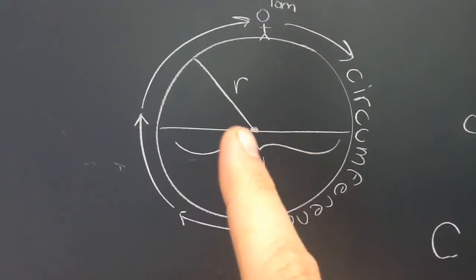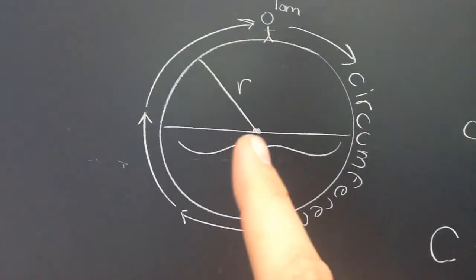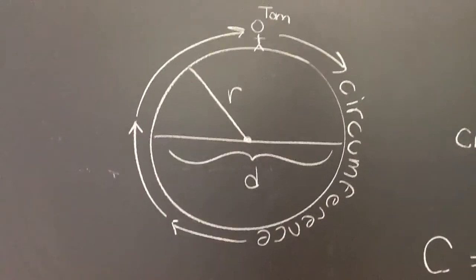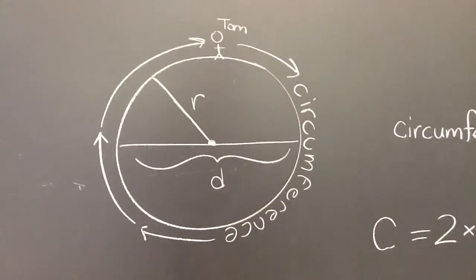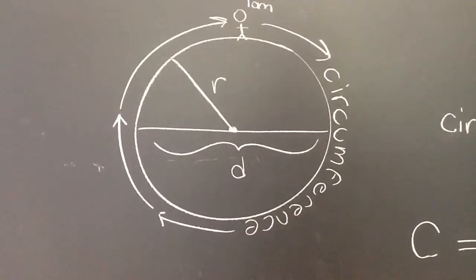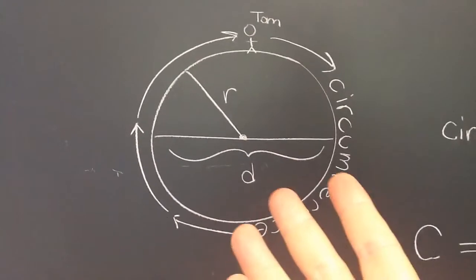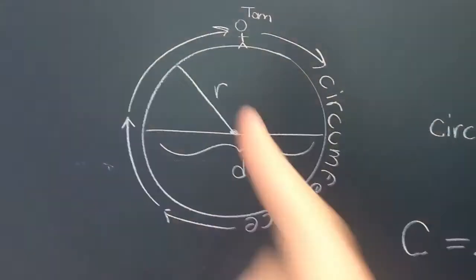The radius is a segment that begins at the center of the circle and goes to a point on the circle. So there's a relationship that exists between diameter and radius. The radius is half of the diameter, or another way to say that is the diameter is twice the radius.